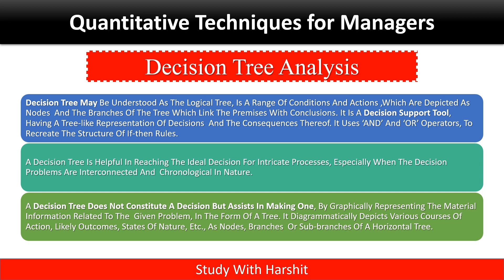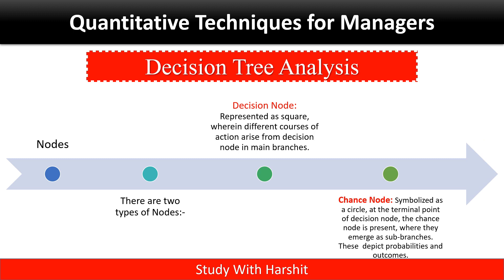A decision tree does not constitute a decision but aids in making one — it is a diagrammatic representation of material information related to a given problem in the form of a tree. It diagrammatically depicts various courses of action, likely outcomes, and states of nature as nodes, branches and sub-branches of a horizontal tree. There are two types of nodes: Decision node — represented by a square, from which different courses of action arise as main branches. Chance node — symbolized as a circle at the terminal point of a decision node, where sub-branches emerge depicting probabilities and outcomes.